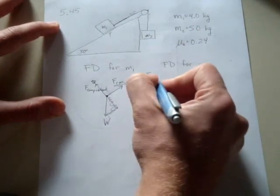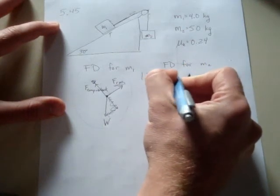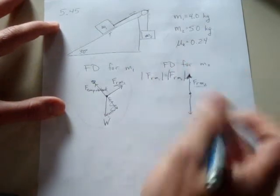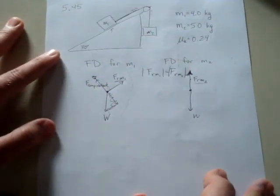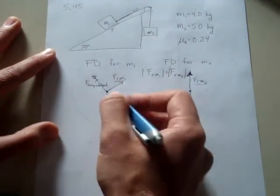So the force within the rope is equal, in magnitude at least. So I'm going to try to make that clear here. I made my notation, what I chose to call things isn't really helpful.